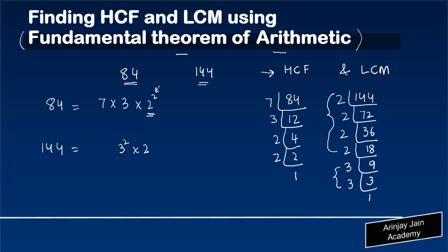So I've got 3 squared and I've got 2 to the power 4, so I can write this down as 3 squared into 2 to the power 4. Please note I have written this just below the other number because that helps you to find out the HCF and LCM. We don't have any 7 in this so I can just write this as 7 to the power 0.